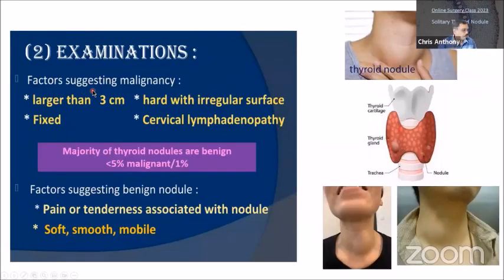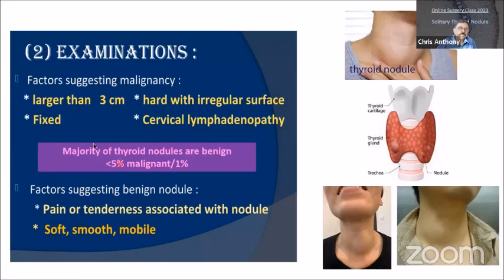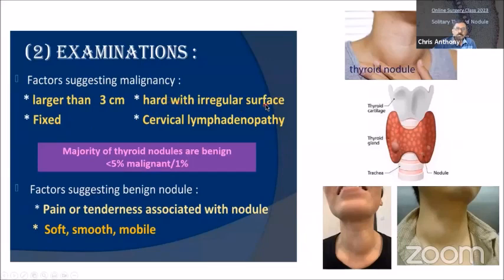On examination, first you see the obvious nodule, describe where it is, how it looks, and whether it moves on swallowing. Once you have confirmed the nodule on inspection and palpation, you look for factors to suggest malignancy. Malignant nodules are usually large ones — more than 3 centimeters, at least more than 2 centimeters. Very tiny lumps, less than 1 centimeter, rarely become malignant. It can become fixed, cannot move, hard with irregular surface, and cervical lymphadenopathy — these are the important signs which suggest malignancy.